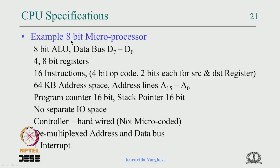The specification: it is an 8-bit microprocessor with an 8-bit ALU, 8-bit data bus D7 to D0, and 4 registers each of 8 bits. It has 16 instructions. Choosing 4 registers means 2 bits for source and 2 bits for destination, making most instructions 1 byte wide. Instructions like jump or call need to specify address, so they could be multiple bytes — for example, 8-bit opcode and 16-bit address.